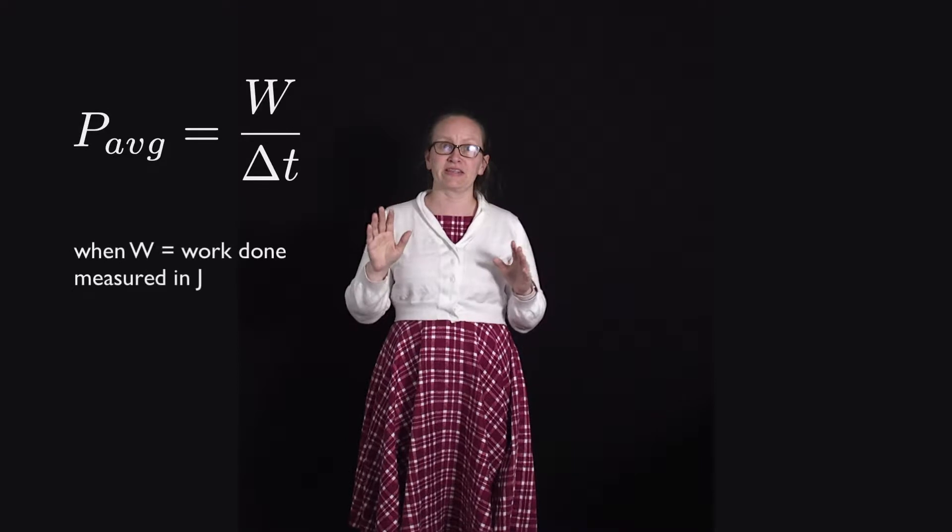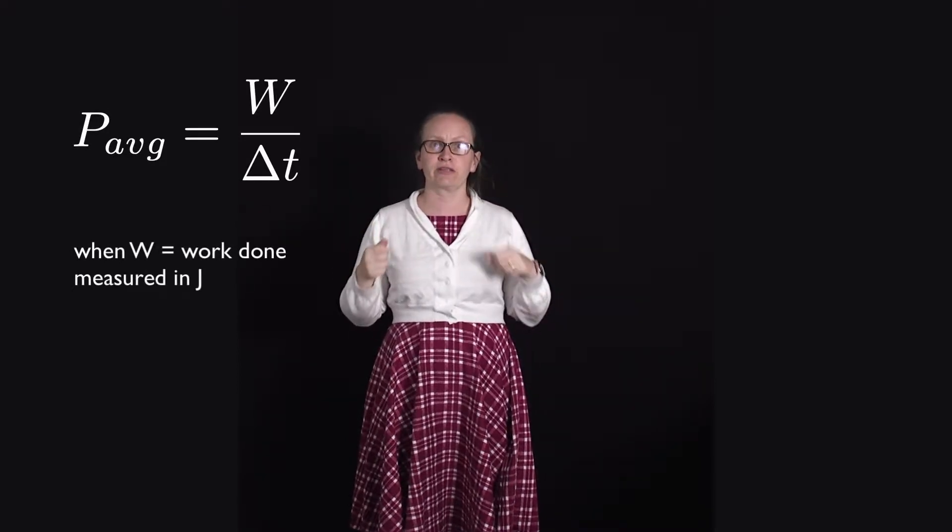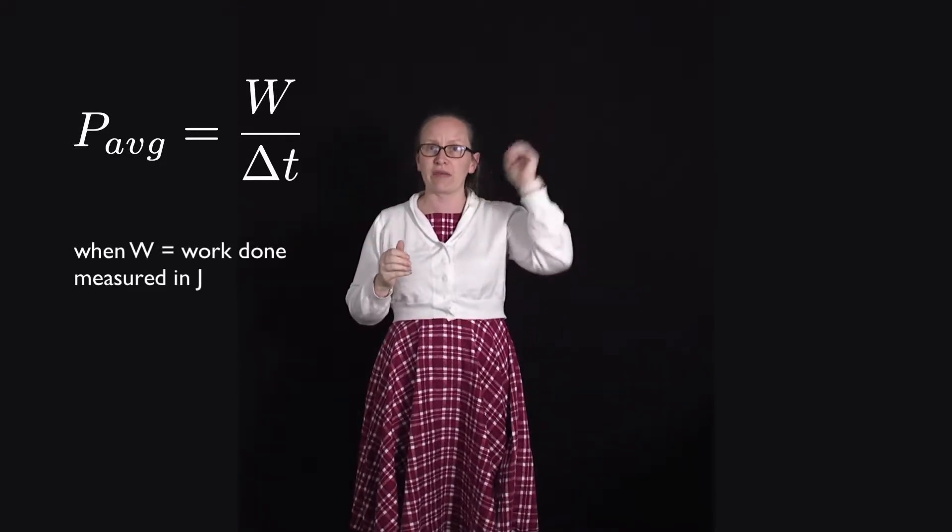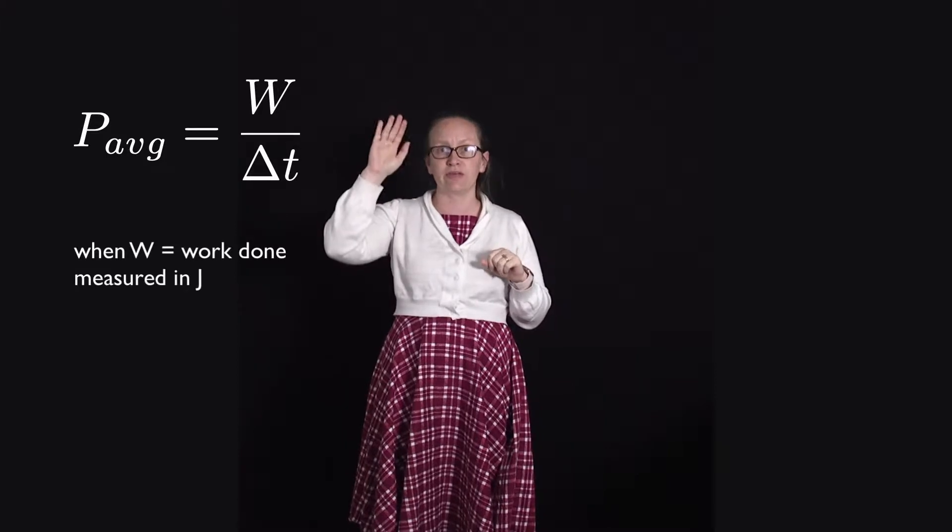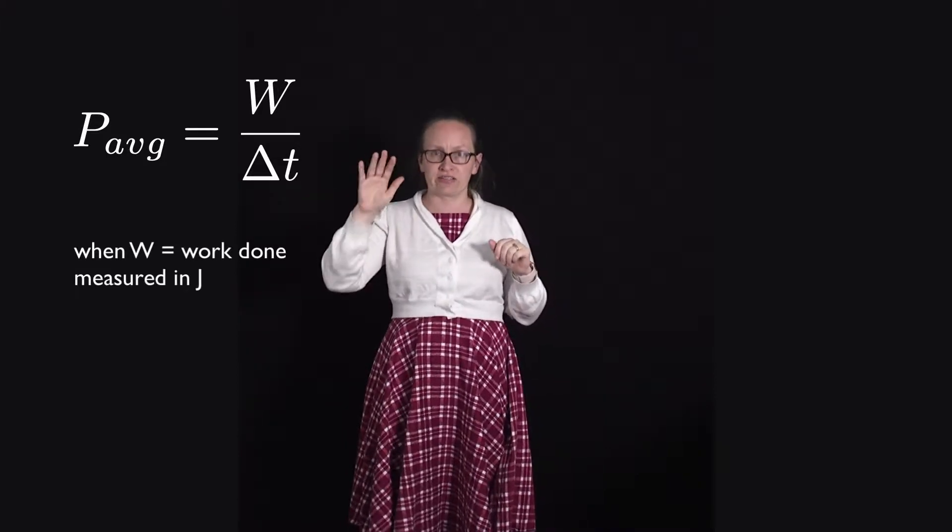It's the rate at which work is done by a force. So the average power is equal to the work divided by the time. As an equation, we can write that the average power is equal to W divided by delta t.